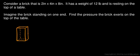So the brick is standing up on end and we're told that it's 2 inches by 4 inches by 8 inches. So 8 inches is obviously the long side and then 2 inches right here is obviously the shortest side and 4 inches is the medium length side. We're told to find the pressure that the brick exerts on the top of the table.